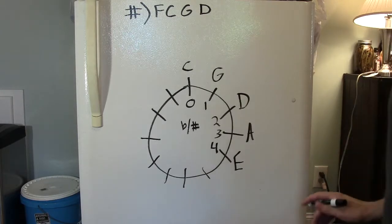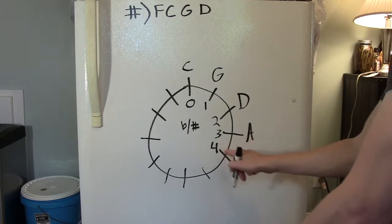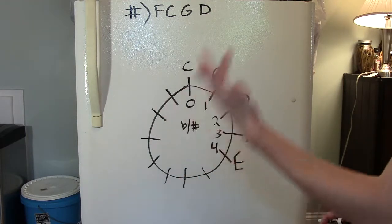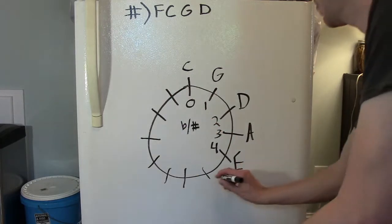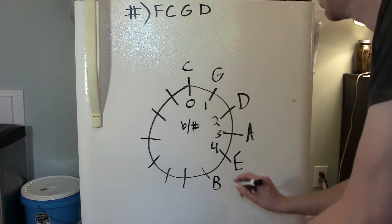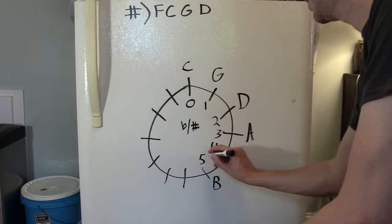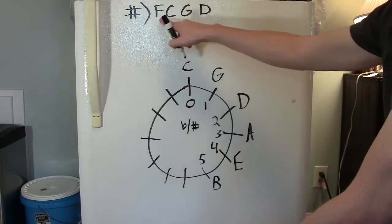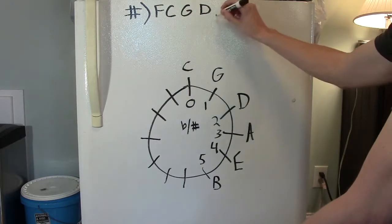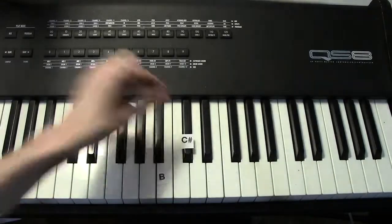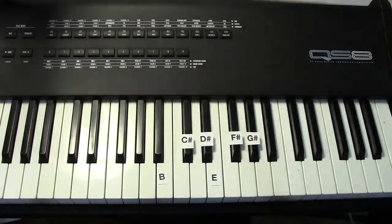Let's travel up another perfect fifth from the key of E. E, F sharp, G sharp, A, B. B major is our next key. The key of B major has five sharps in it. Those sharps are F, C, G, D, and A. C sharp, D sharp, F sharp, G sharp, A sharp.